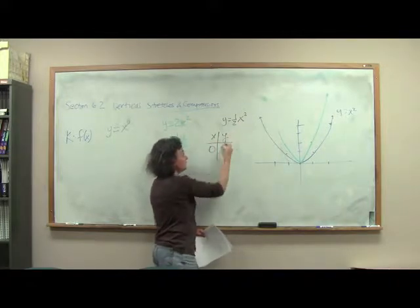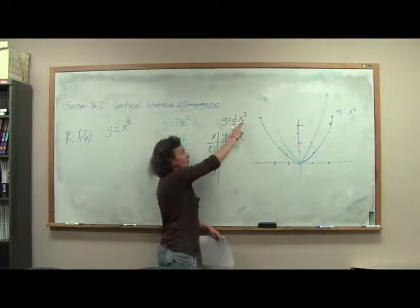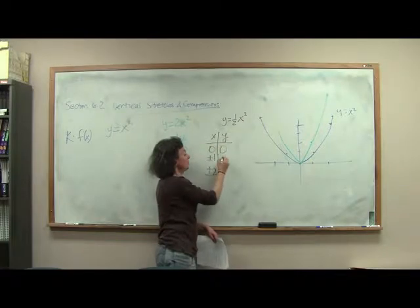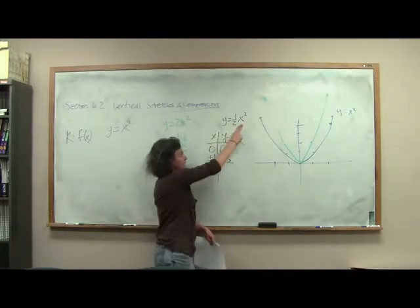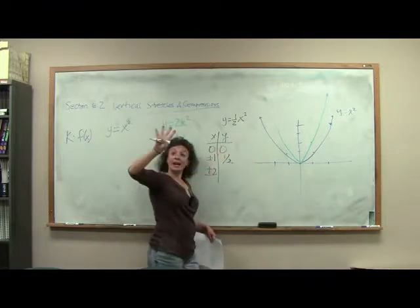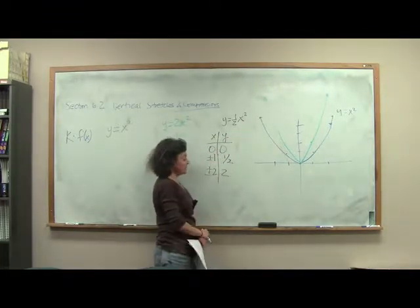Again, if you plug in 0, 0 is going to come out. If you plug in either positive or negative 1, you square them to get 1, but then you multiply it by 1 half to get 1 half. If I square 2, I get 4, but now I'm taking half of it, so I'm down at 2.